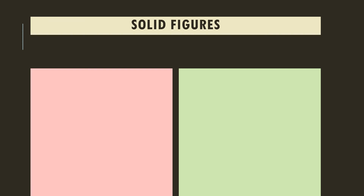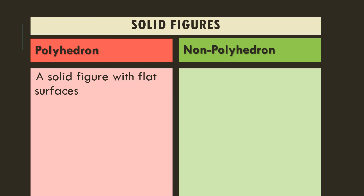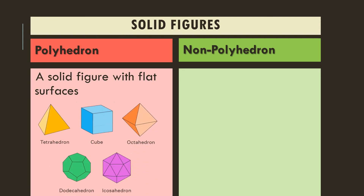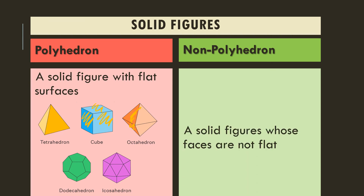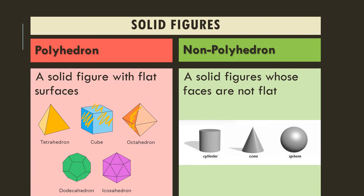Solid figures can be grouped into two: polyhedron and non-polyhedron. Polyhedrons are solid figures with flat surfaces — all of their faces are flat. Non-polyhedrons are figures whose faces are not flat. For example, the cylinder's surface is curved and circular, the cone's surface is curved, and the sphere is obviously curved — these are all non-polyhedrons.